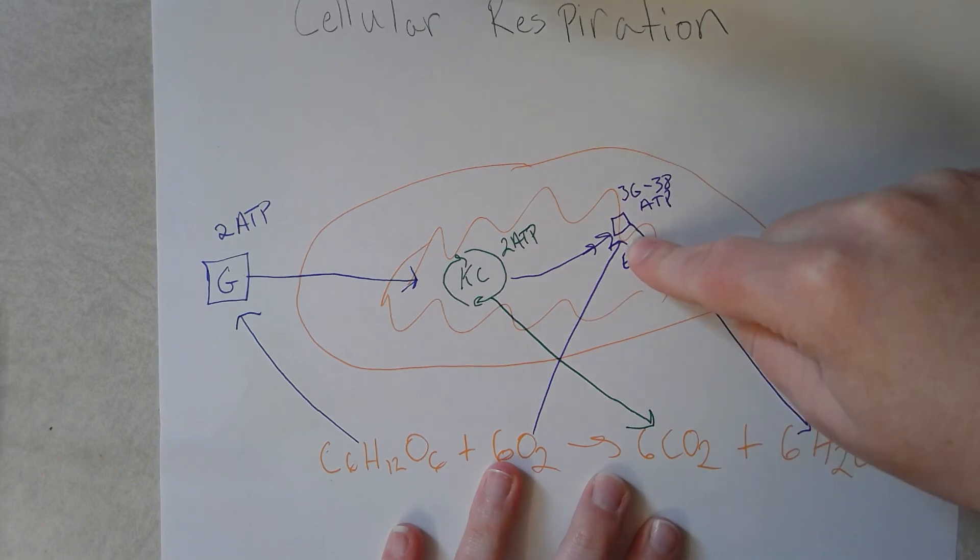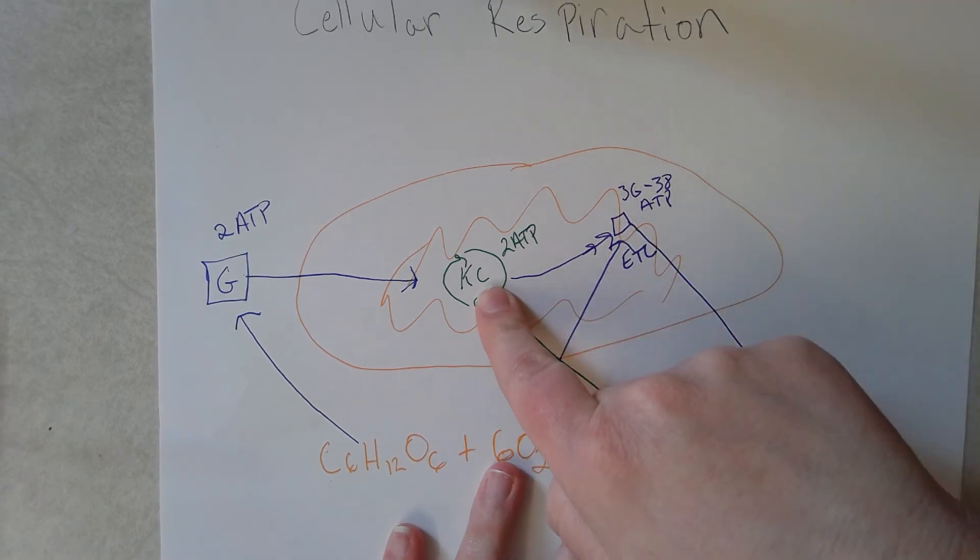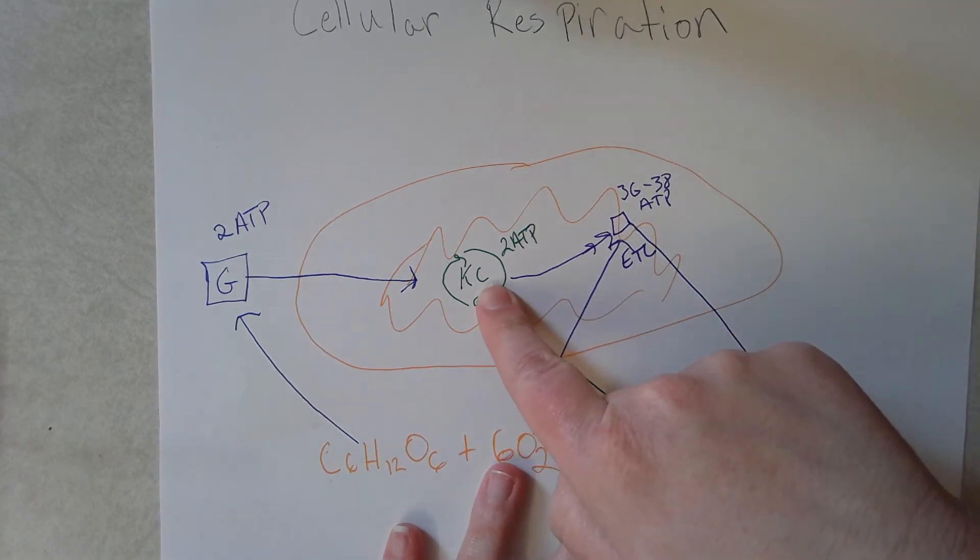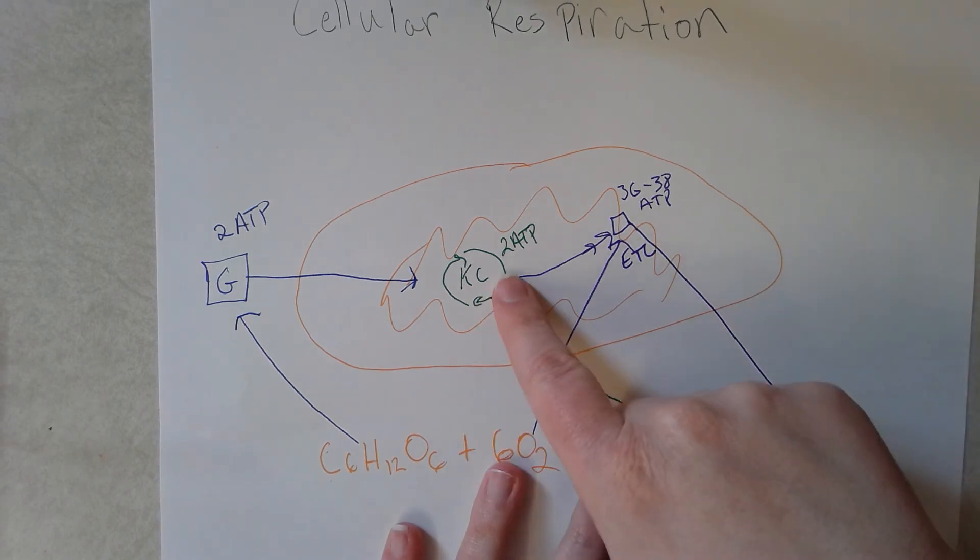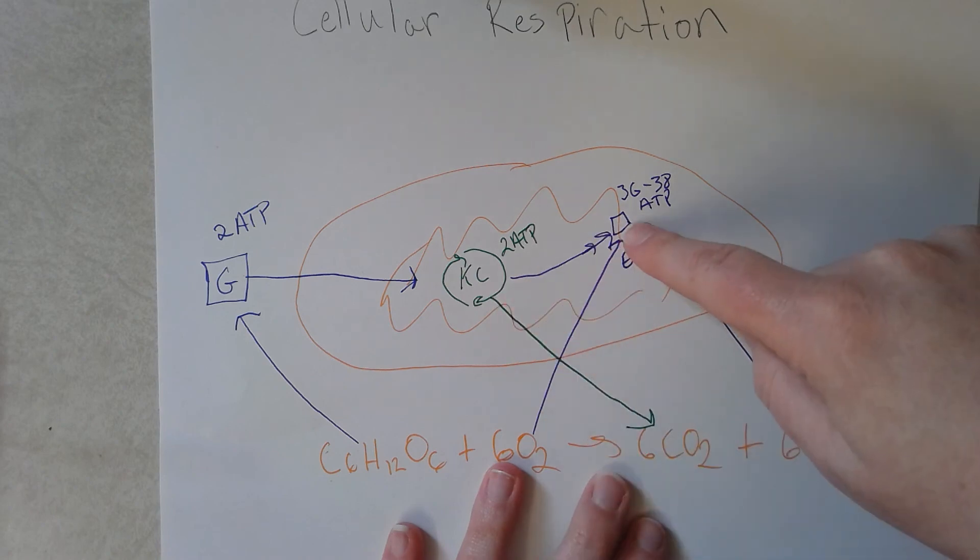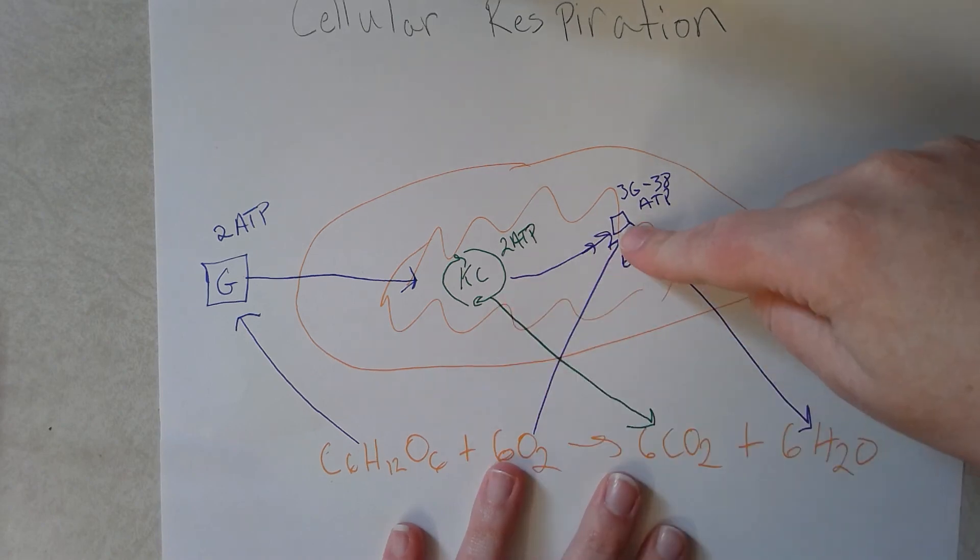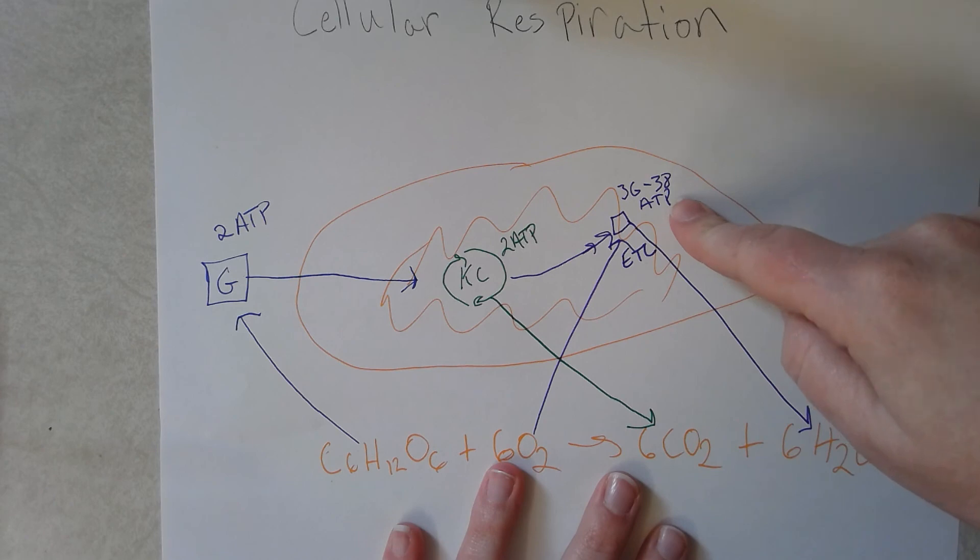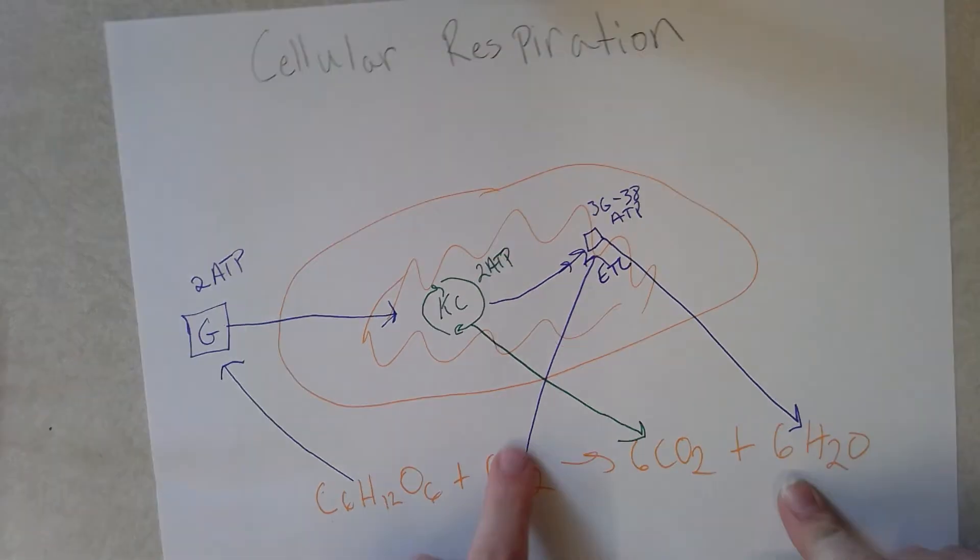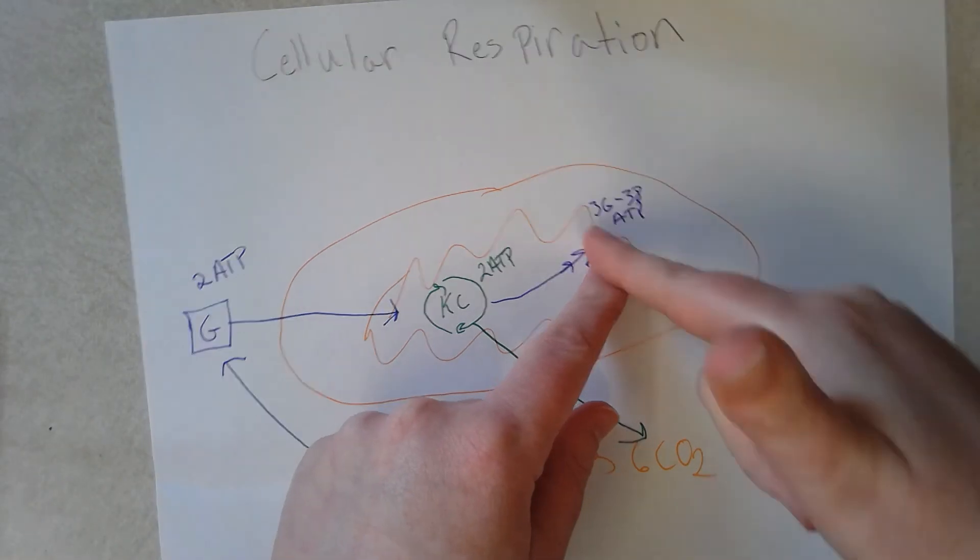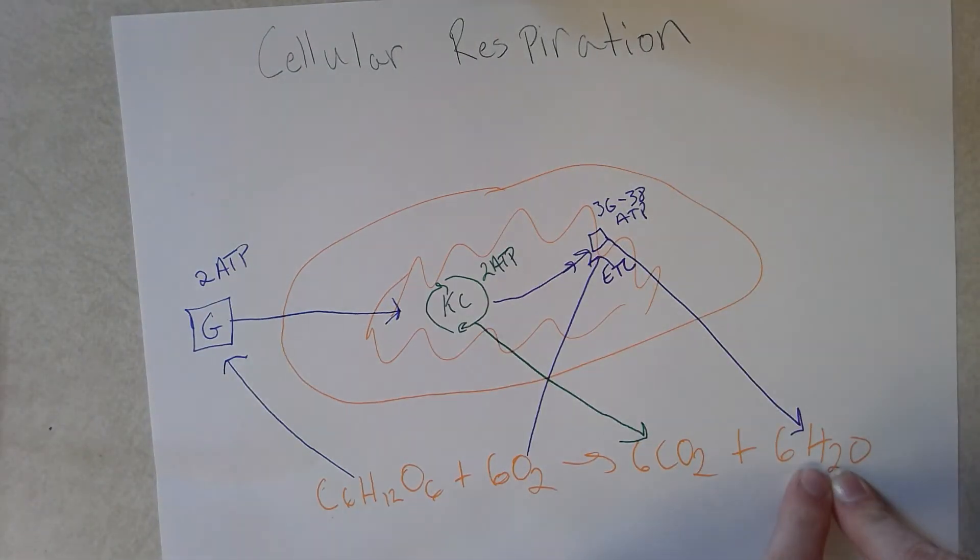So this produces our electron acceptors NADH and FAD, and those are going to go to the electron transport chain. And then more ATP is going to be created, and water is going to be made from the chemical reactions there. So it goes in as oxygen, meets up with hydrogen atoms, becomes water.